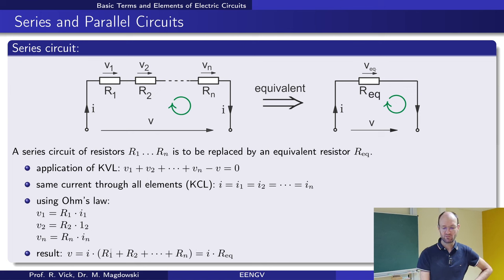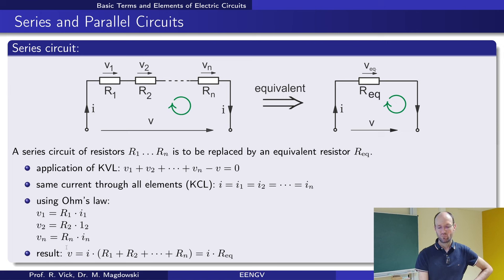Since the current is the same through each element, we can factor it out of the parenthesis. Summing all the resistors gives us the equivalent resistance of the series connection, because voltage equals current times resistance — Ohm's law. So for a series connection, you simply add up the resistors.